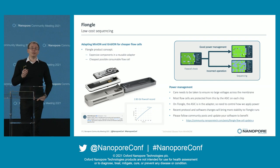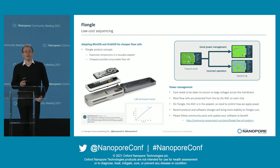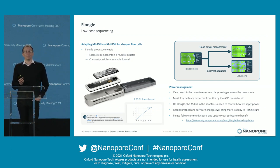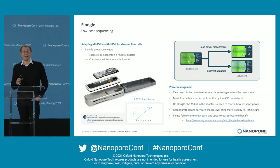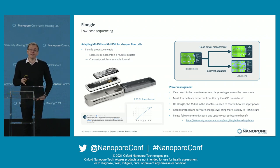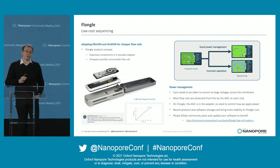There is a community record of 2.83 gigabases for a Flongle flow cell run — that's better than our internal data, so congratulations to the people that ran that.